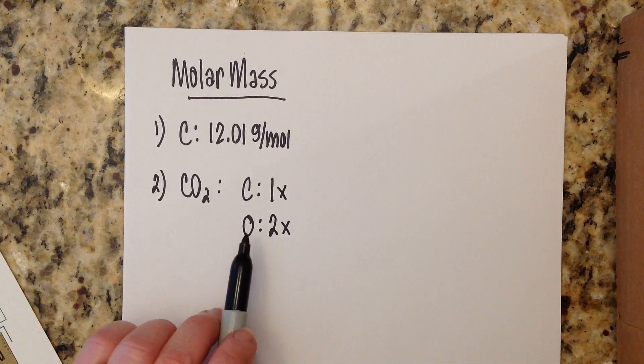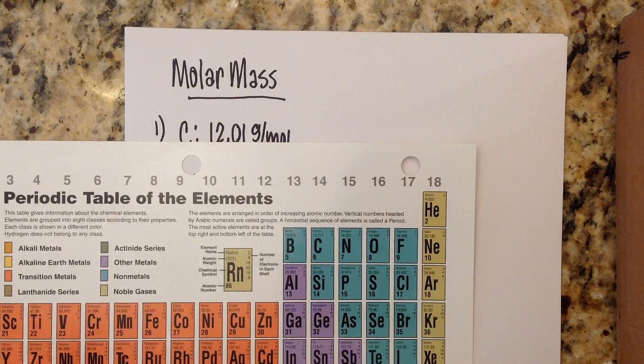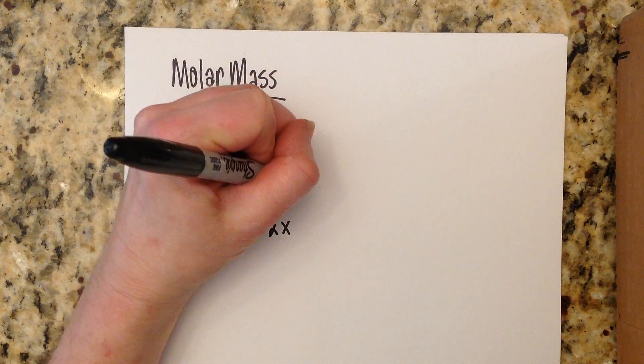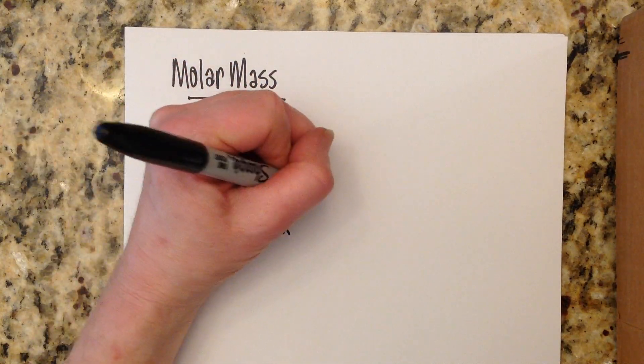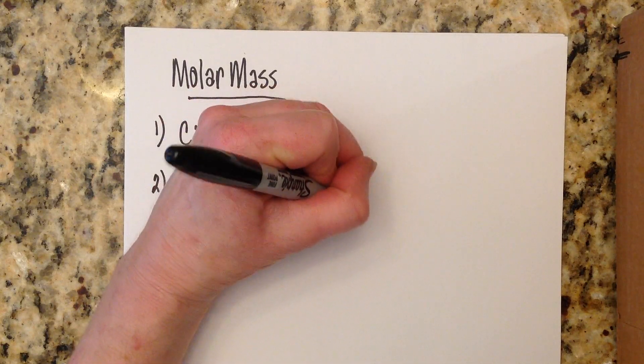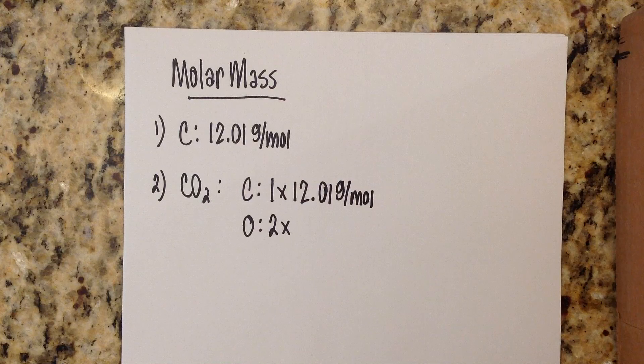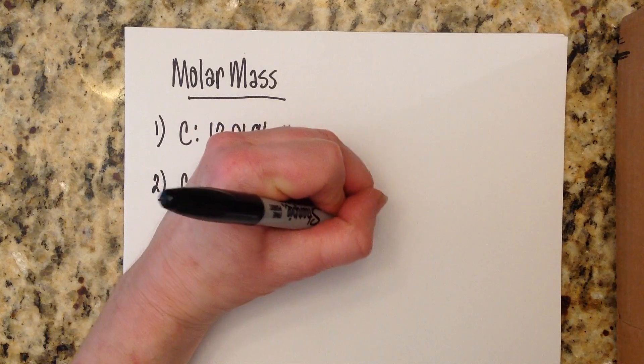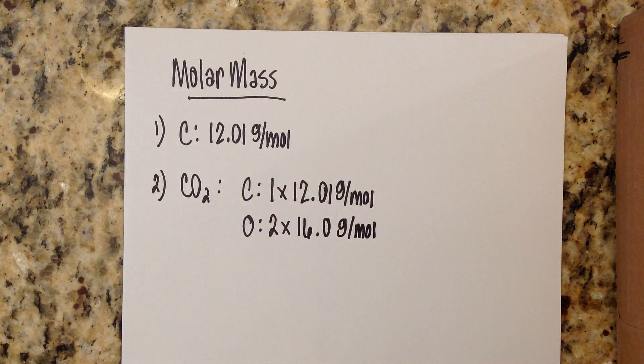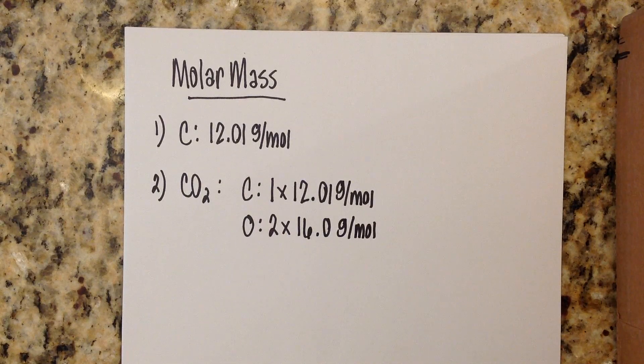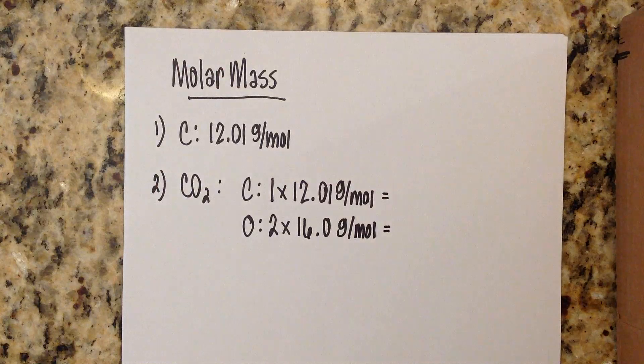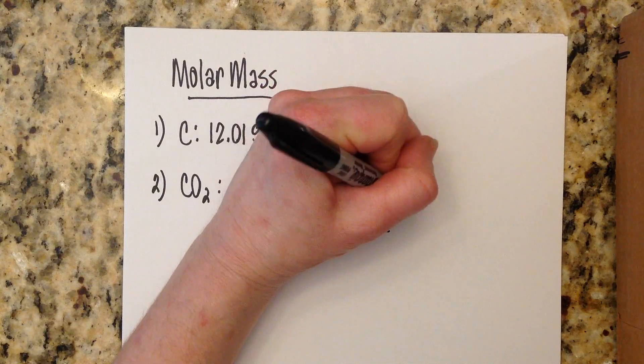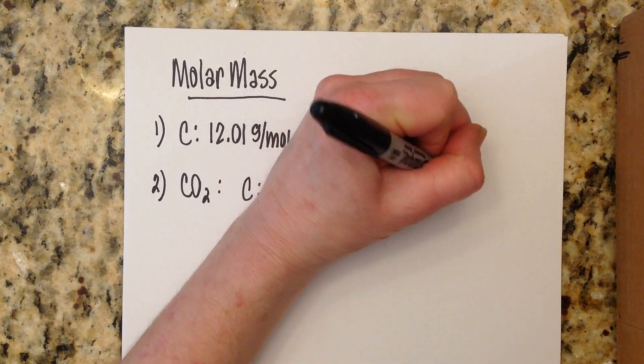Now what we want to do is we want to look up the molar masses of each of these atoms on the periodic table. So when you look at carbon, that is right here - carbon has a molar mass of 12.01 grams per mole. Remember the molar mass is the larger of the two numbers that are in that little box on the periodic table. So 12.01 grams per mole. Oxygen has a molar mass of 16.0 grams per mole. This is one of those elements where it is acceptable and universally accepted to round to one place past the decimal for most people, especially beginners in chemistry.